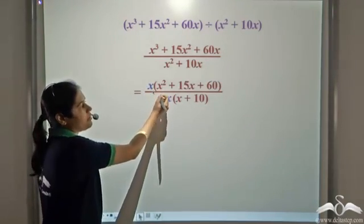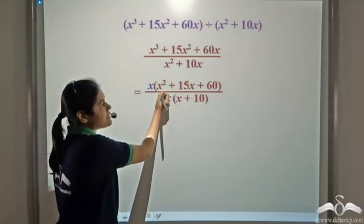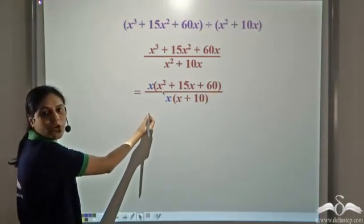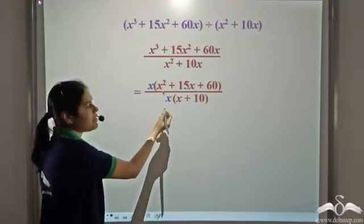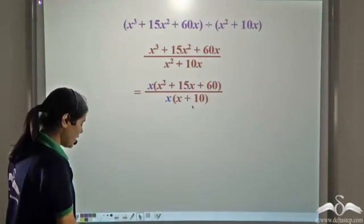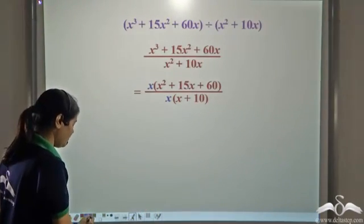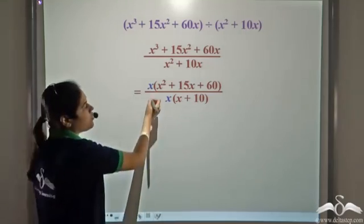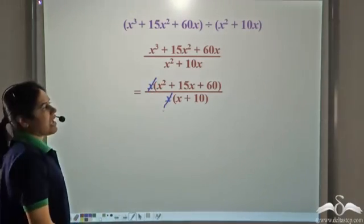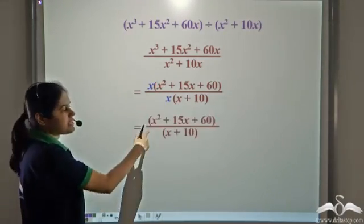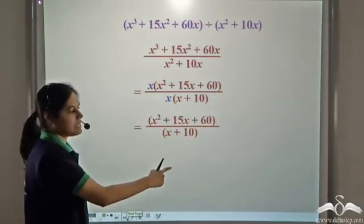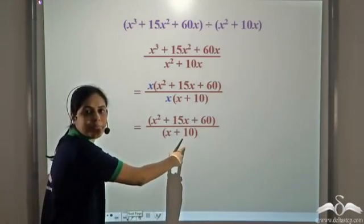We take x common from the numerator and write it as x times (x squared plus 15x plus 60). From the denominator as well, we take x common and write it as x times (x plus 10). Now we cancel out this x and we are left with (x squared plus 15x plus 60) divided by (x plus 10).